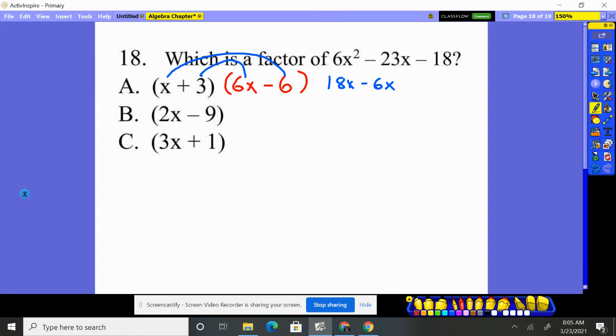All right, let's test the next one. 2x times 3x will give you the 6x². Negative nine times positive two will give you the negative 18. So that'll create the front and the back.